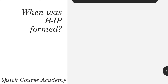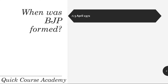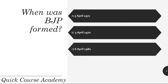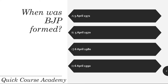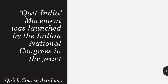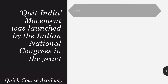When was the BJP formed? 5th April 1972, 5th April 1970, 6th April 1980, or 6th April 1990? And the correct answer is 6th April 1980. The Quit India Movement was launched by the Indian National Congress in the year...